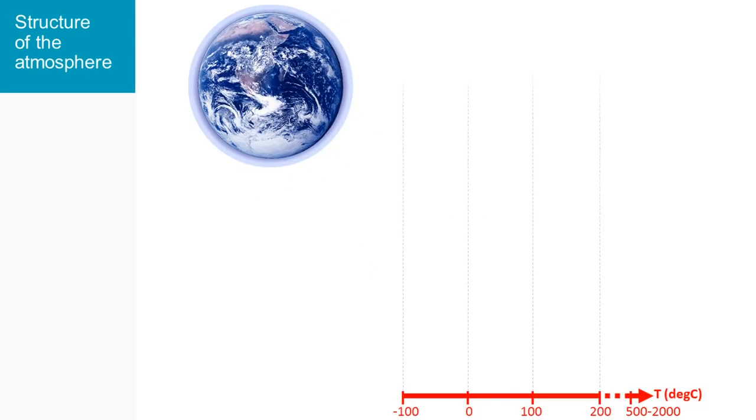Based on temperature inversions, four layers can be defined within the Earth's atmosphere. At the bottom, the troposphere is the most dense and extends up to about 10 km.